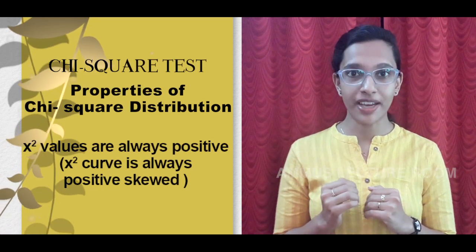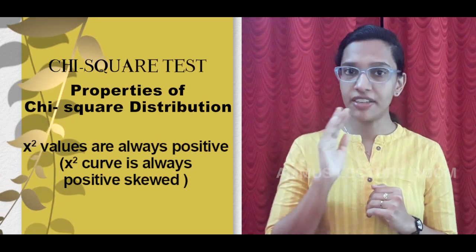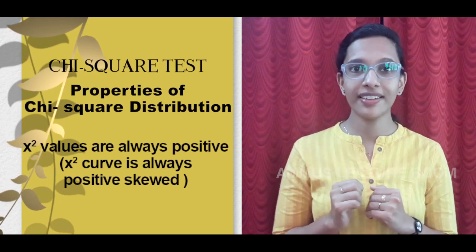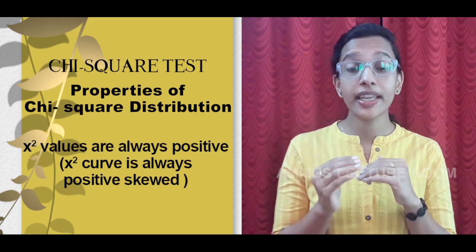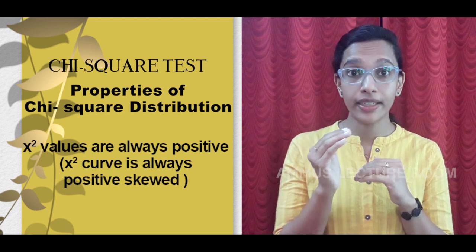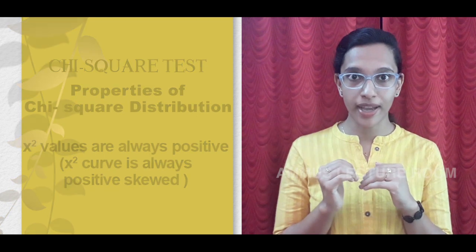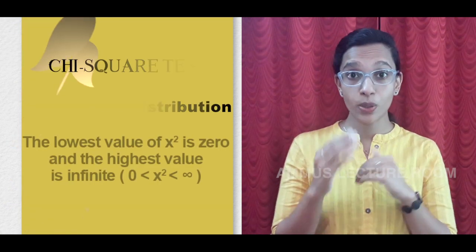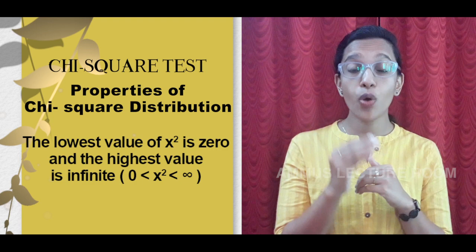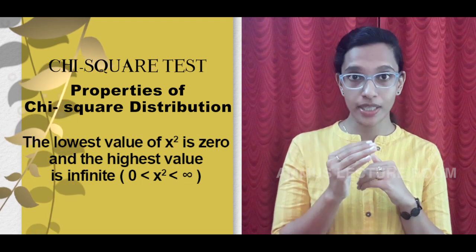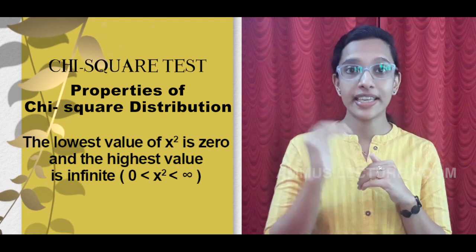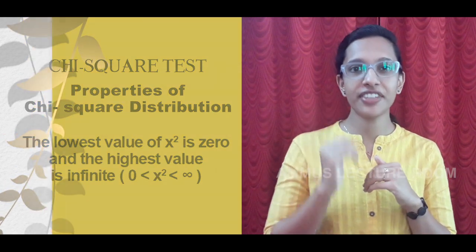Negative values are not possible in chi-square test. The chi-square test is positively skewed. The lowest value is zero and the highest value is infinity.